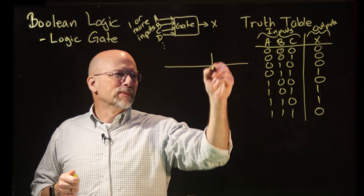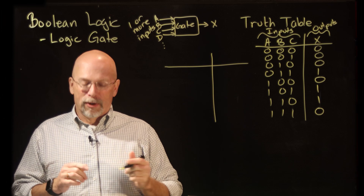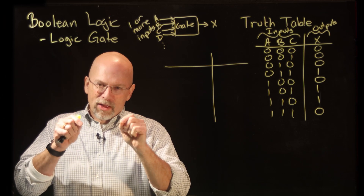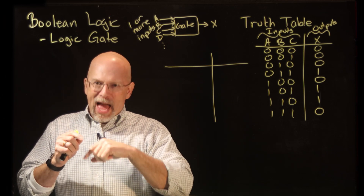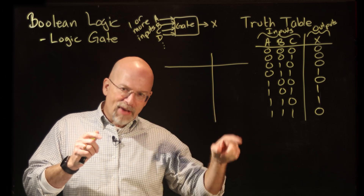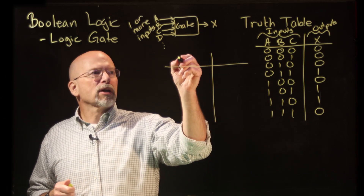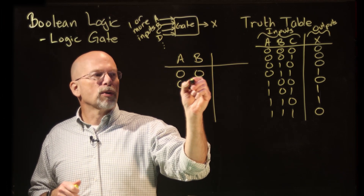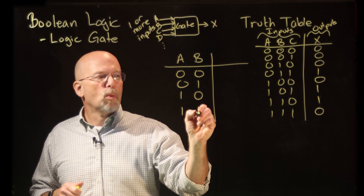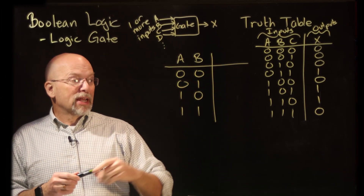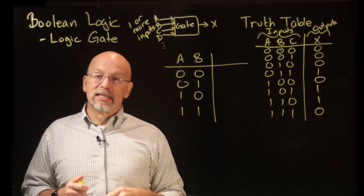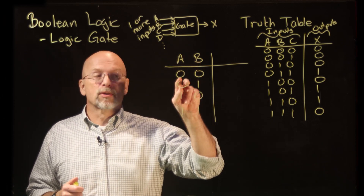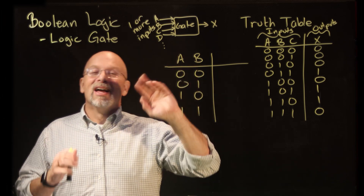What I might do is have a two-bit counter with inputs A and B. The period of the counter determines how long each light stays on. The counter cycles through: 00, 01, 10, 11, then back to 00, and so forth.